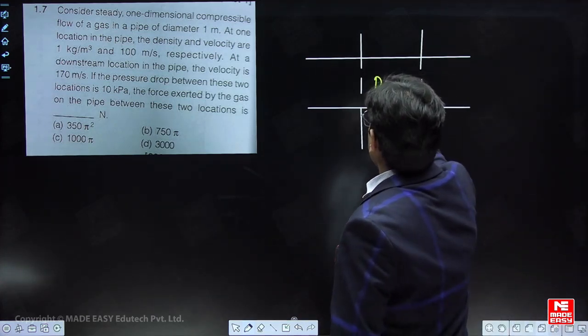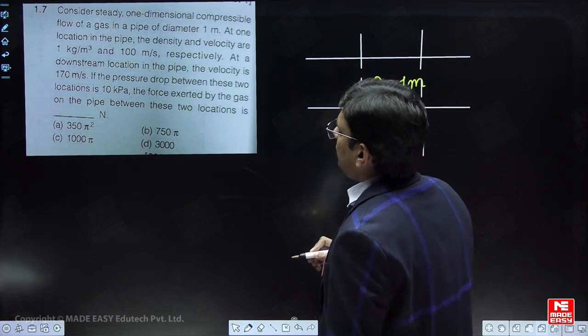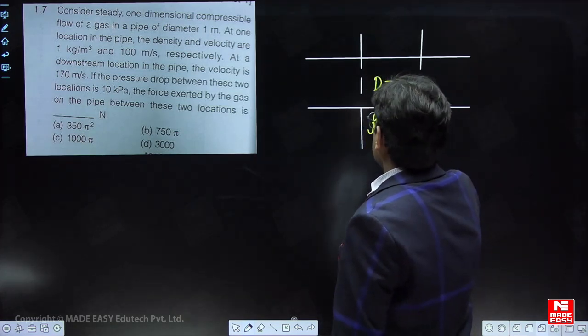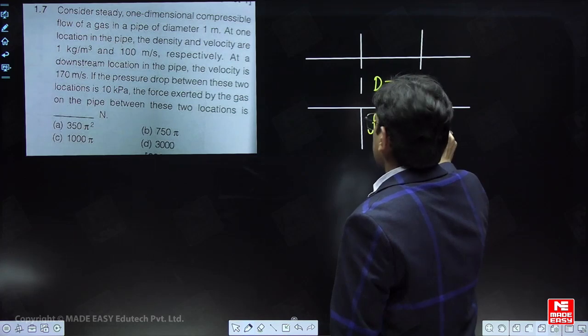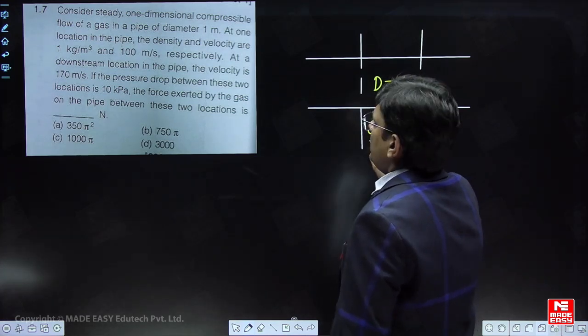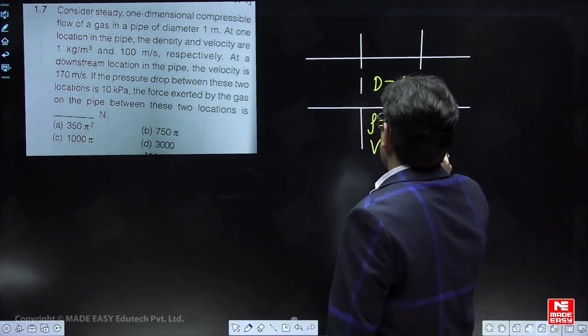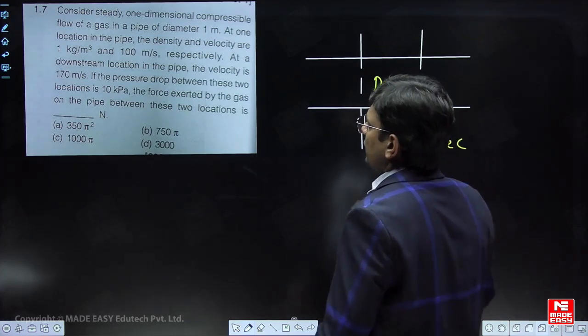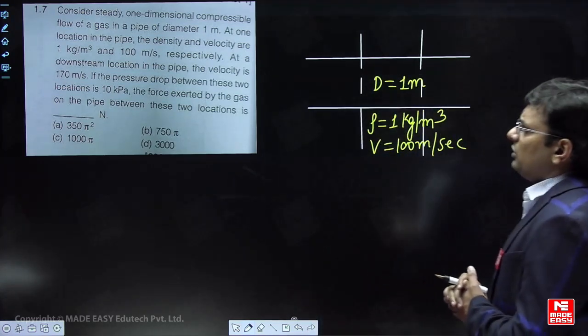At one location in the pipe, the density is 1 kg per meter cube and the velocity is 100 meters per second.